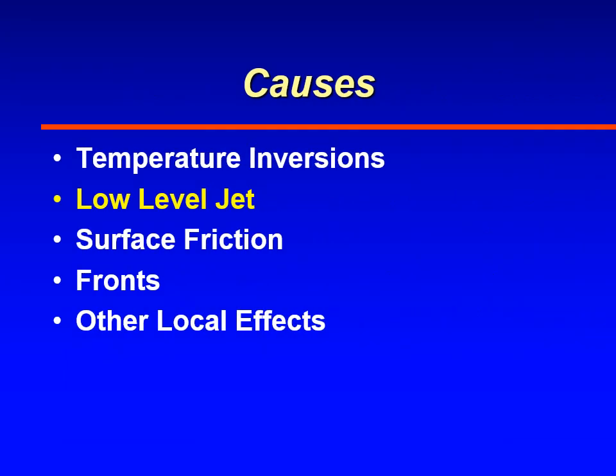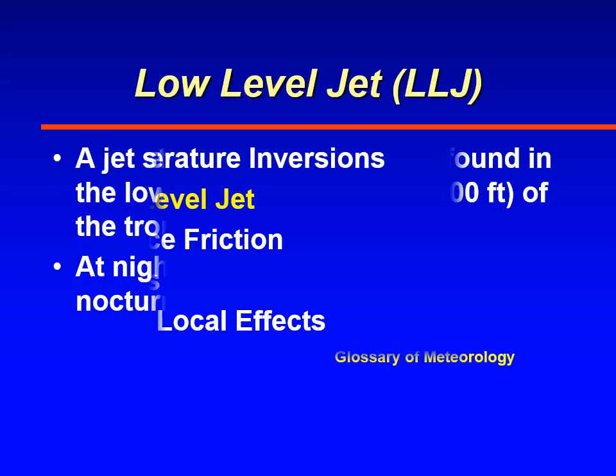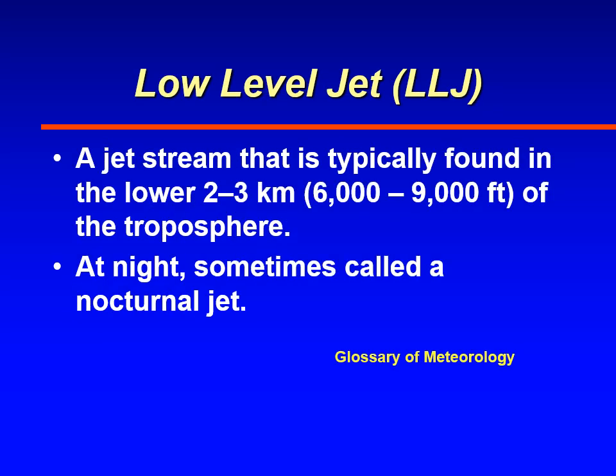The next cause of wind shear we'll discuss is low-level jet streams. The low-level jet stream, by definition, is a jet stream typically found in the lower 2 to 3 kilometers — about 6,000 to 9,000 feet of the troposphere — and it usually occurs at night, which is why it's sometimes called a nocturnal jet.